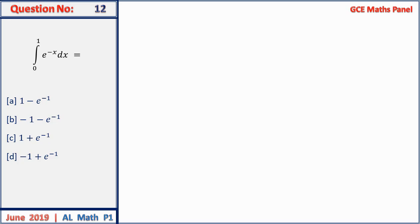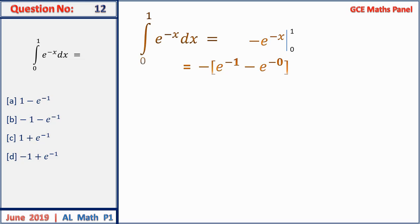Question 12: the integral of e^(−x) from 0 to 1 is [−e^(−x)] evaluated from 0 to 1, giving −e^(−1) − (−1) = 1 − e^(−1). Answer A.